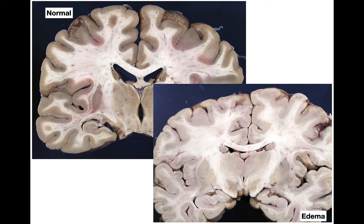For the normal versus edema cross-section comparison: in the top left you can see a normal brain with open ventricle spaces, whereas in the image at the bottom right, the ventricles are compressed and slit-like because the brain has been edematous.